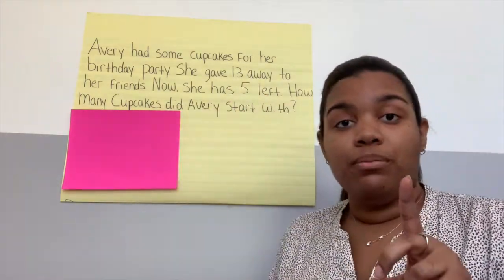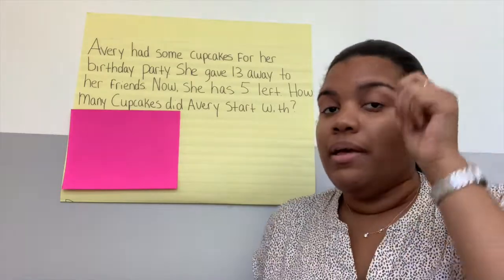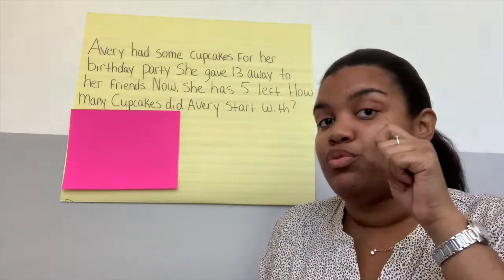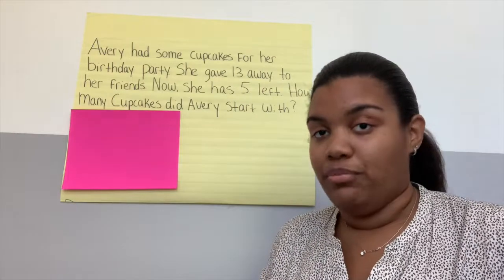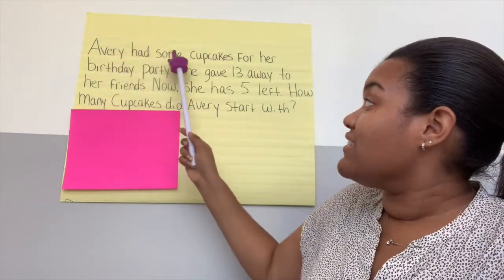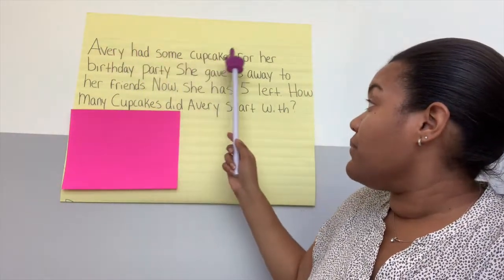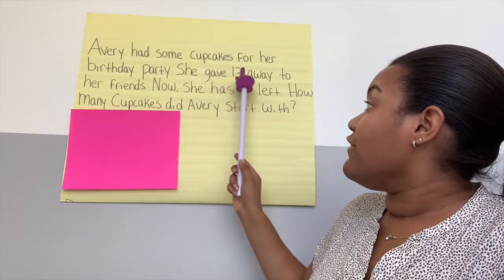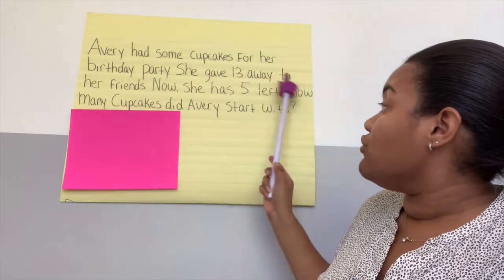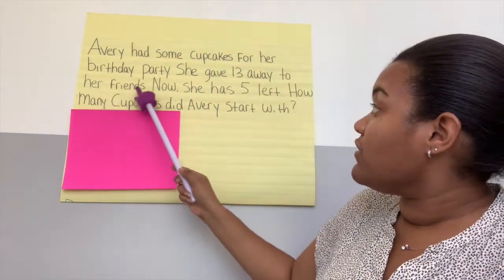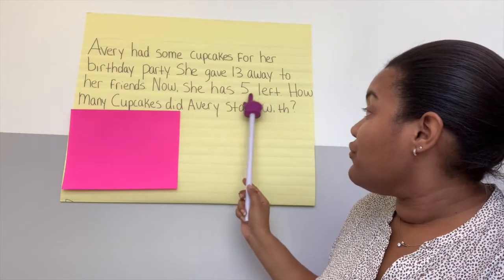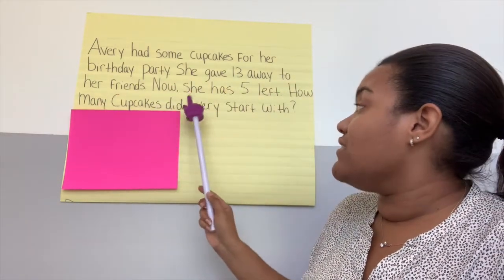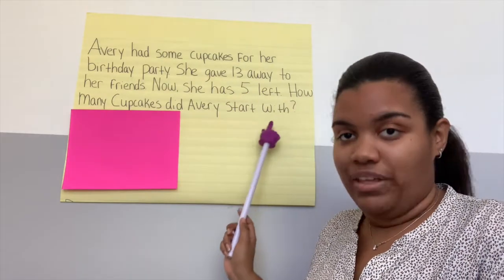One more time — magnifying glasses up, looking for those words and those important numbers. Avery had some cupcakes for her birthday party. She gave thirteen away to her friends. Now she has five left. How many cupcakes did Avery start with?